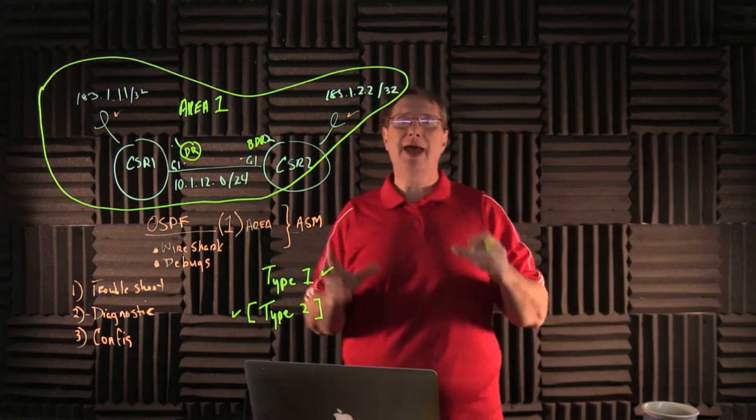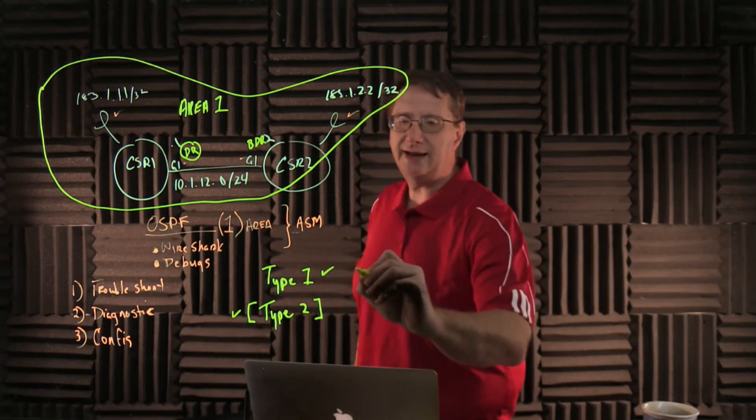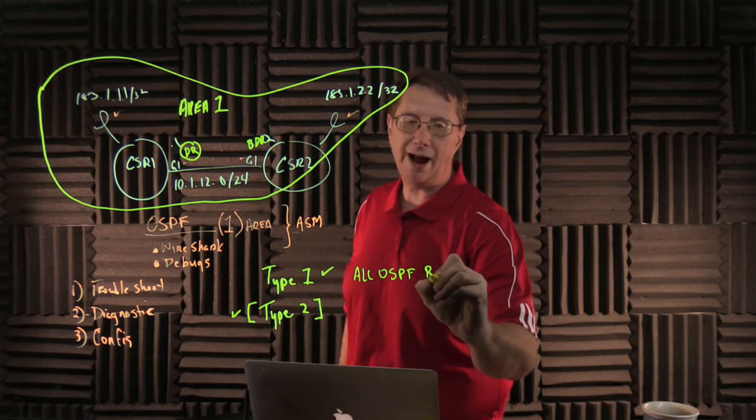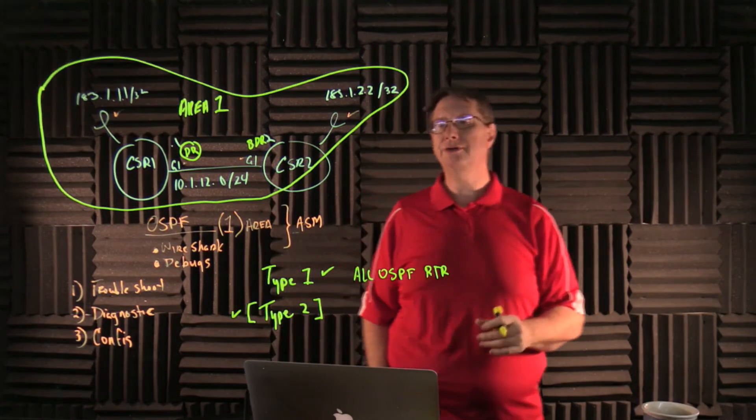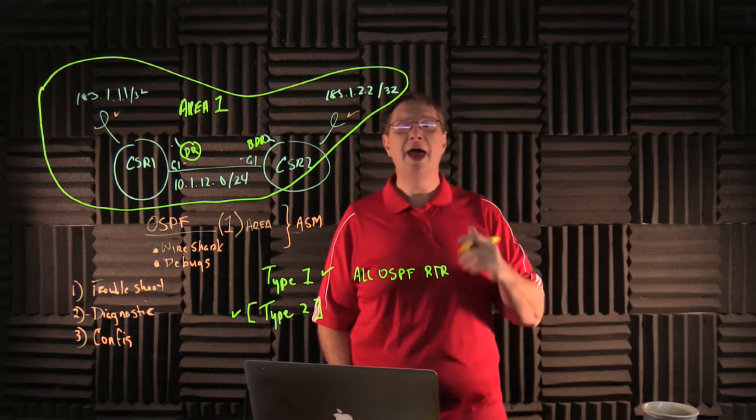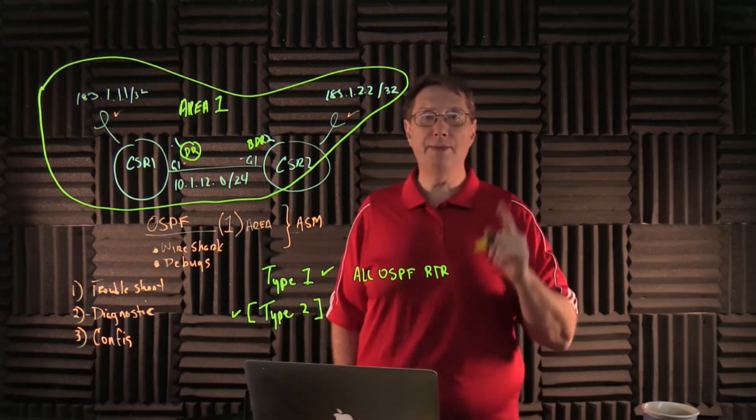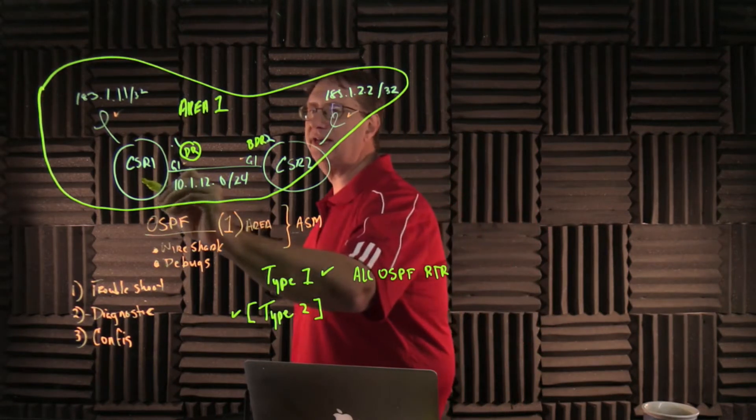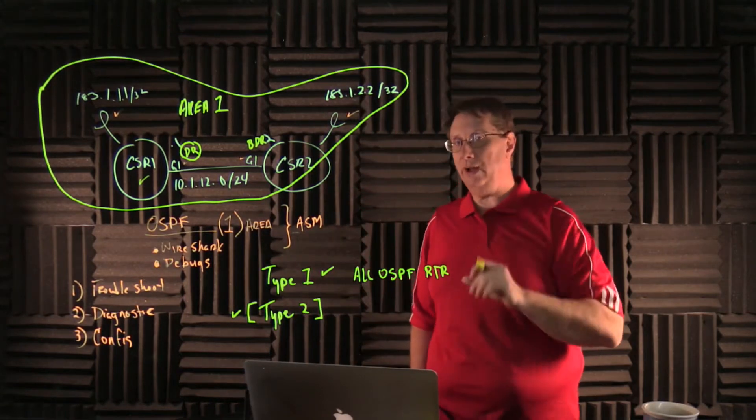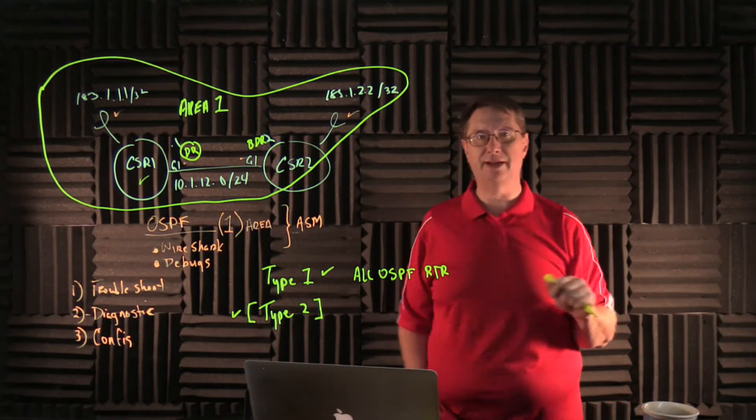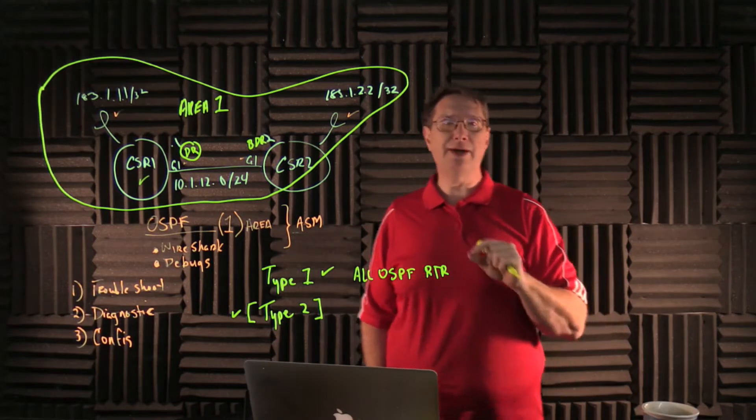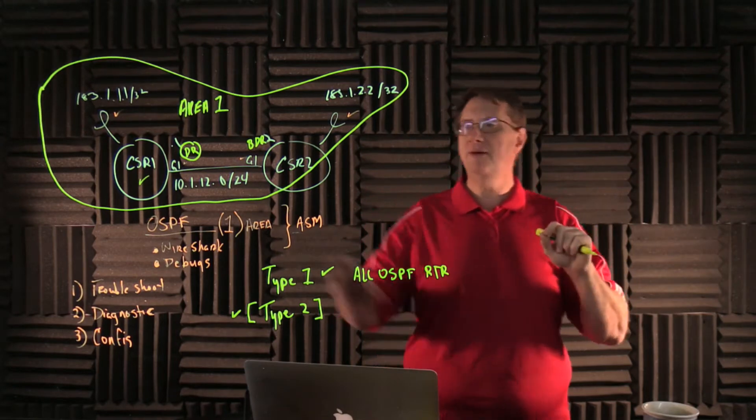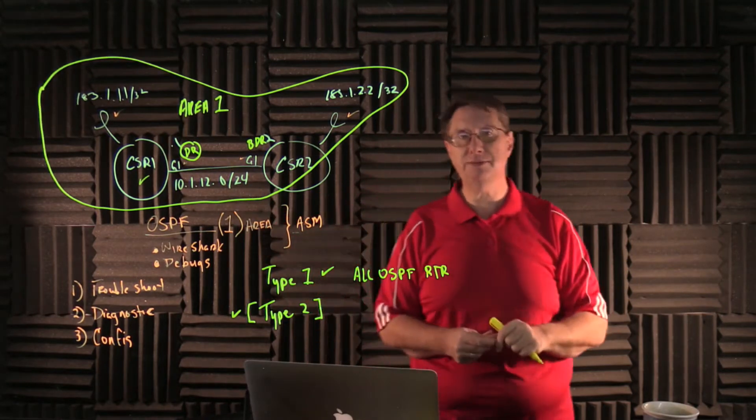Now with that being said, it has to be mentioned that every router, so all OSPF speakers, or all OSPF routers, will generate a Type 1 LSA. Now that Type 1 LSA will generate one for every area the device is in. And as we can see right now, CSR1 is only in Area 1, so it will only generate one Type 1 LSA. But it must be noted that that Type 1 LSA is going to contain information for more than one prefix if more than one interface is participating in OSPF.